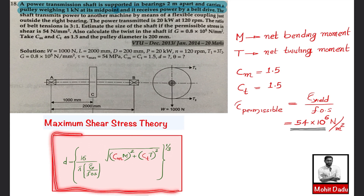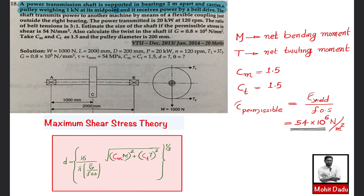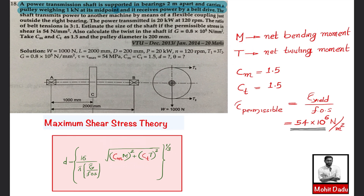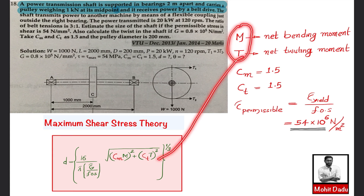The design equation from the data book (page 51) is: diameter = (16 / (π × τ_allowable)) × √((cm × M)² + (ct × T)²), raised to 1/3. Here cm and ct are correction factors for bending moment and twisting moment, both taken as 1.5. M is the net bending moment and T is the net twisting moment. The allowable shear stress τ is 54 × 10⁶ N/m².